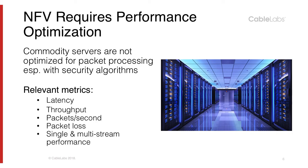Next, let's look at performance. Commodity servers, by definition, are not optimized for packet processing — especially when you add security algorithms requiring encryption, hash functions, and so on. There are a variety of relevant performance metrics, ranging from latency, throughput, packets per second, and packet loss, to the distinction between single-stream and multi-stream performance. For example, some systems may perform very well with multiple streams, getting multiple tens of gigabits per second, but when you send only one stream, the performance may be different — so that has to be taken into account.